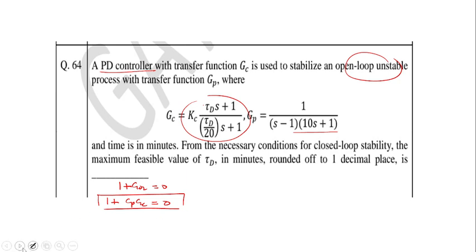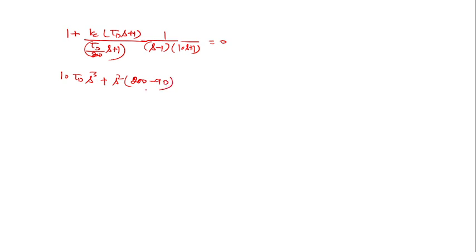So if you put the value of G_P and G_C, then you will get the polynomial: 1 plus K_C times (tau_d times S plus 1) upon (tau_d by 20 times S plus 1) into 1 upon (S minus 1) times (10S plus 1) equals 0. If you solve this polynomial, you will get the following equation: 10 tau_d S cubed plus S squared (200 minus 9 tau_d) plus S times (20 K_C tau_d minus tau_d minus 190) plus 20 K_C equals 0. This is the polynomial.